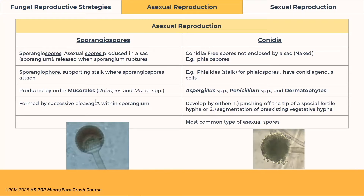Sporangiospores are asexual spores produced inside a sac called a sporangium, which lies on a stalk called a sporangiophore. The sporangiospores are formed by successive cleavages within the sporangium. An example is Mucorales, including Rhizopus and Mucor.